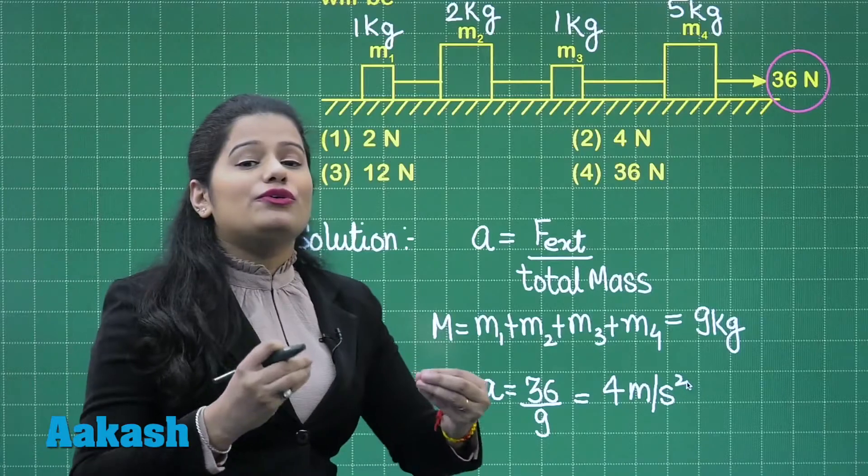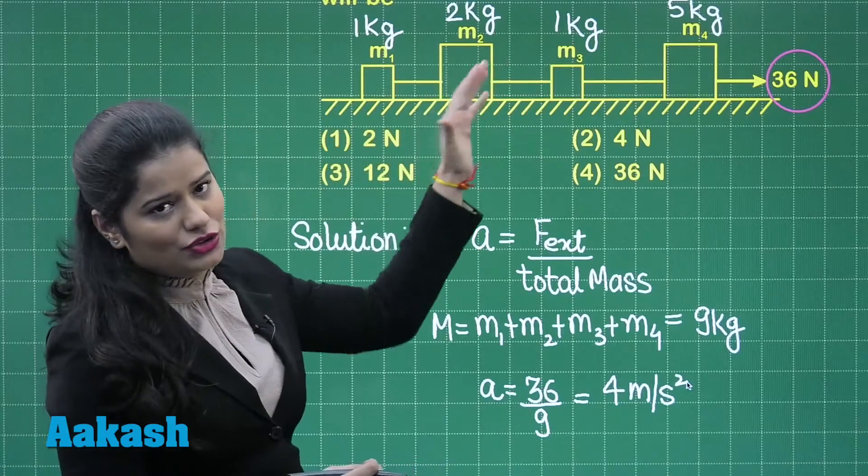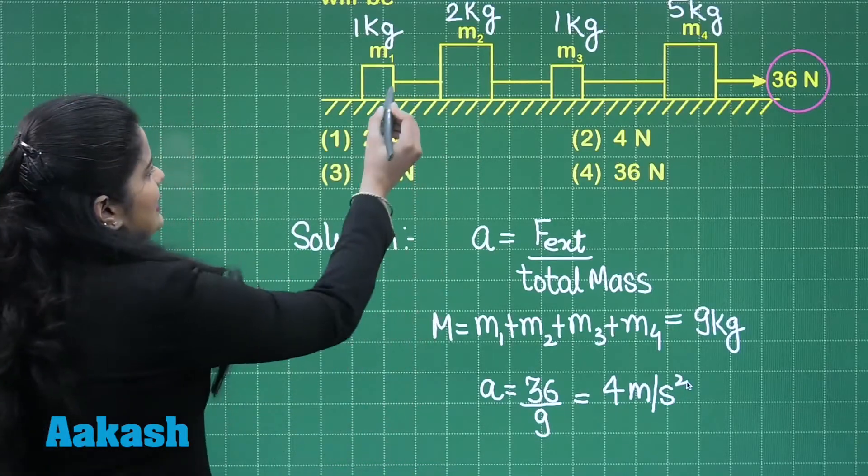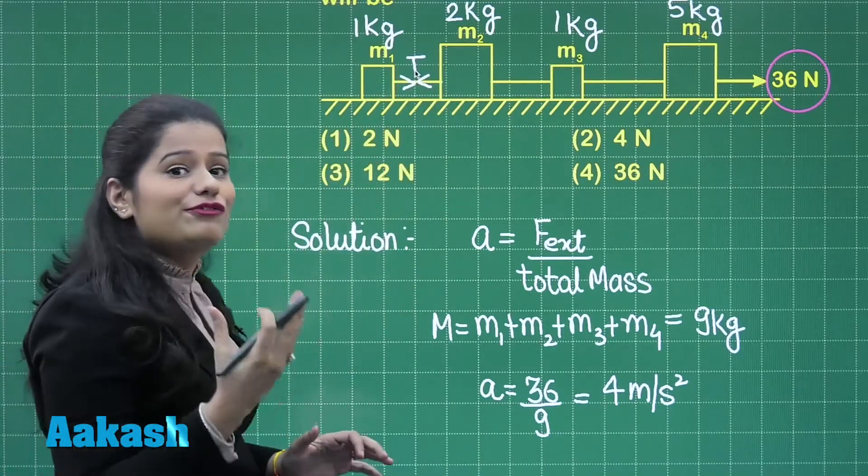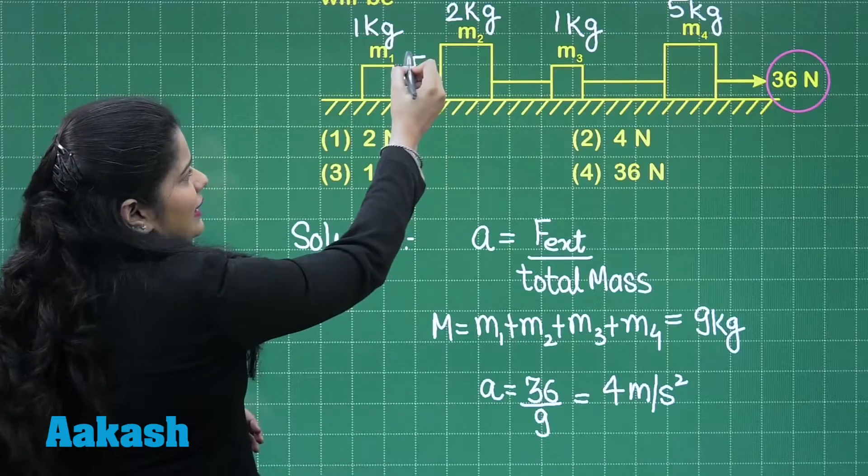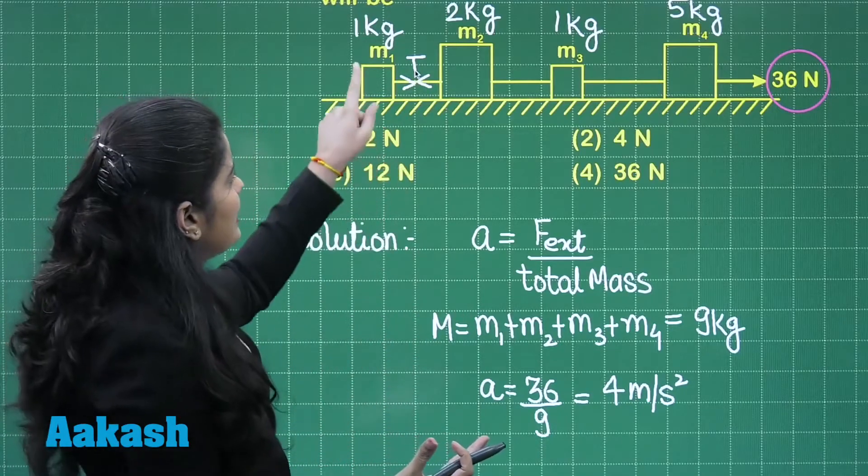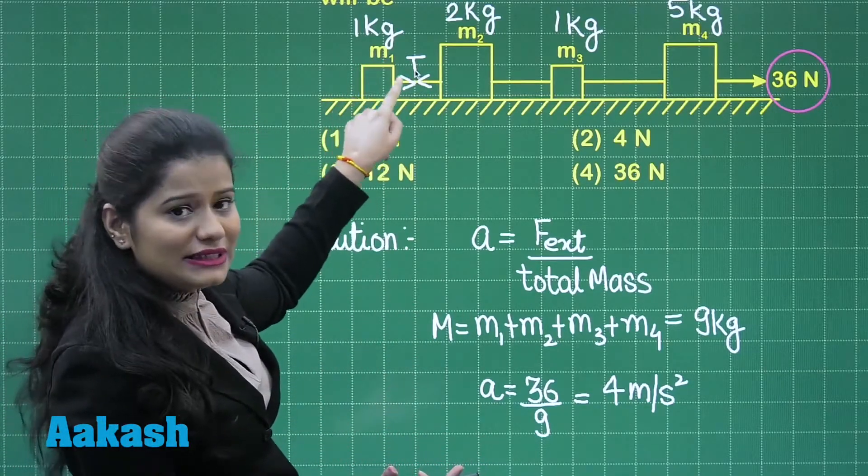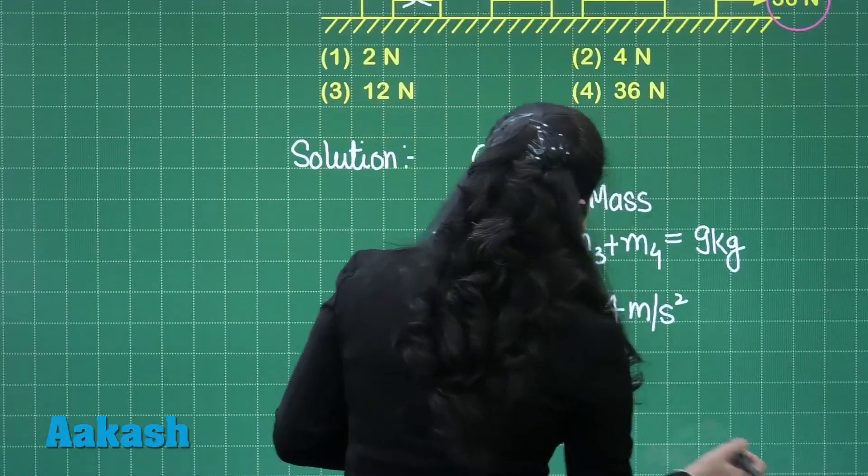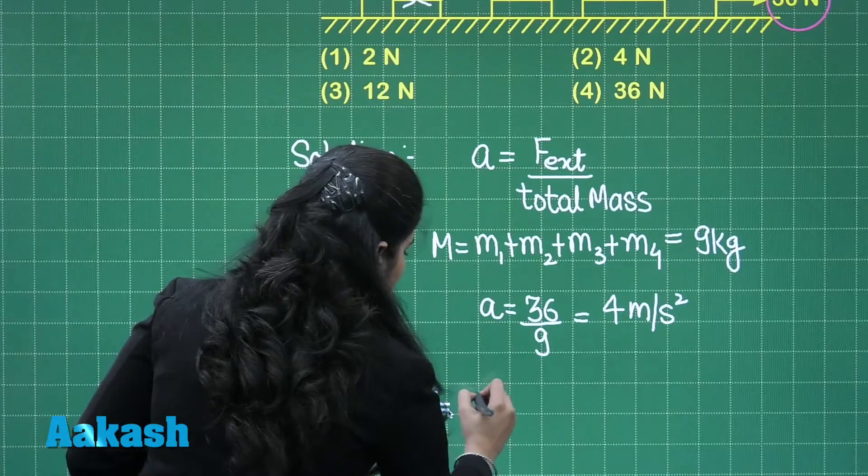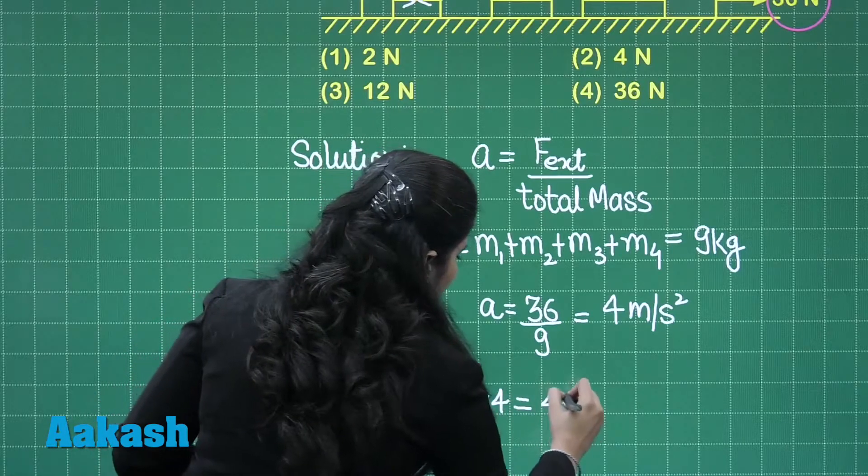Now, in this question we need to find out the force by which this M1 is being pulled in the direction of motion. So, here you can see there is a string attached and the tension in that string is going to be that force and the tension can be calculated by the formula M1 into A. So, what I just going to do is I will multiply the mass M1 of this block with the acceleration with which this block is moving. So, this T will be equal to 1 into 4 that is 4 Newton.